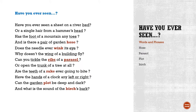The poem is 'Have You Ever Seen?' Have you ever seen a sheet on a river bed? The poet is asking if anyone has seen a sheet on a river bed. We generally use a sheet on a bed, but the river bed means the base of the river. Or a single hair from a hammer's head — the hammer also has a head like we do, but he is asking does it also have a single hair on a hammer's head.